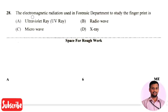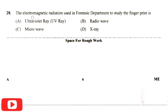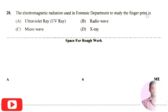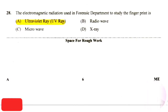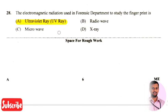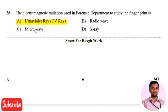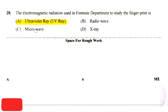The next question is: the electromagnetic radiation used in the forensic department to study fingerprints is — the right answer is option one, that is ultraviolet rays, that is UV rays. UV rays are used in the forensic department to study fingerprints.